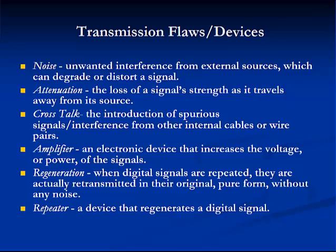Let's review transmission flaws in telecommunication devices — this will be covered in greater detail in Module 8. These are the most important aspects: Noise is unwarranted interference from external sources which can degrade or distort a signal. Attenuation is a loss of signal strength as it travels away from its source.